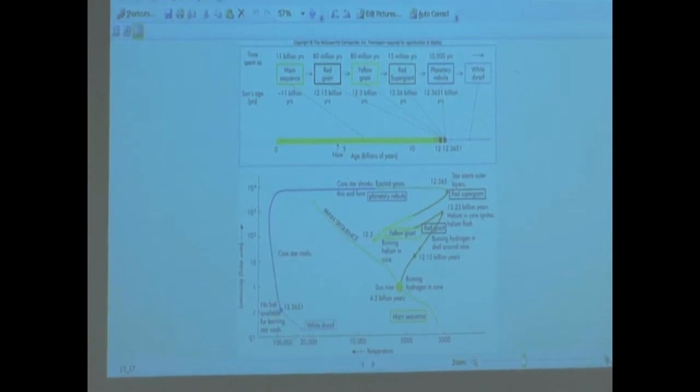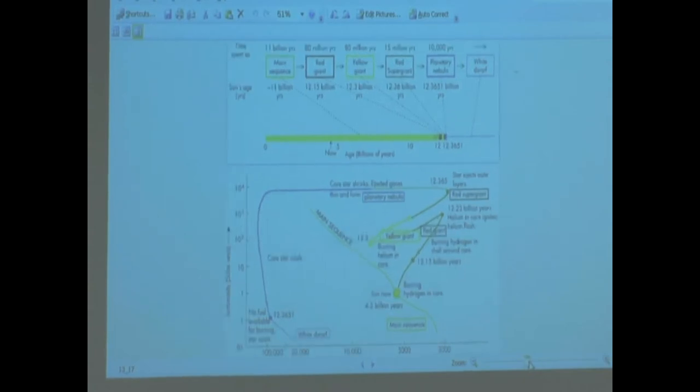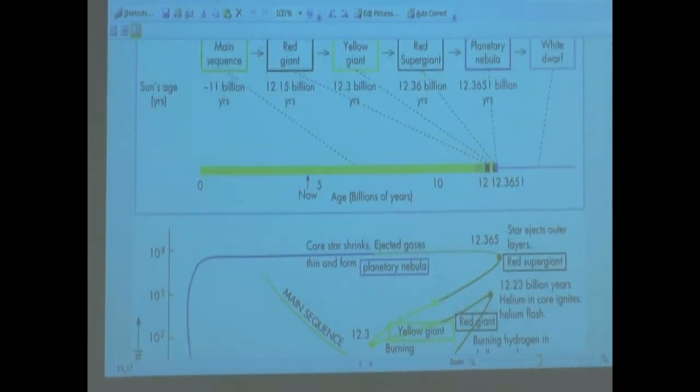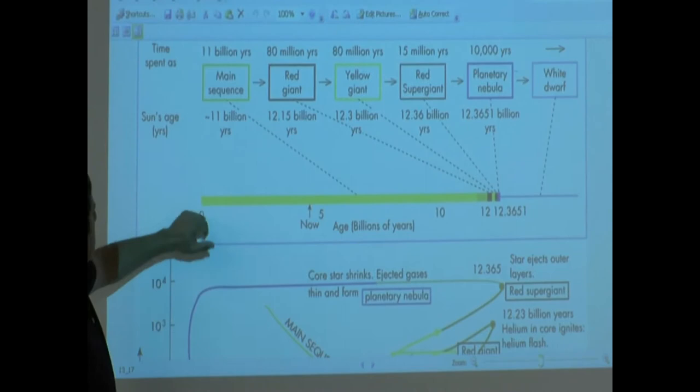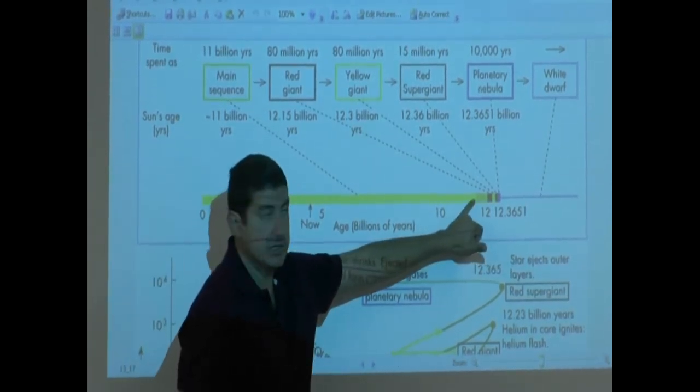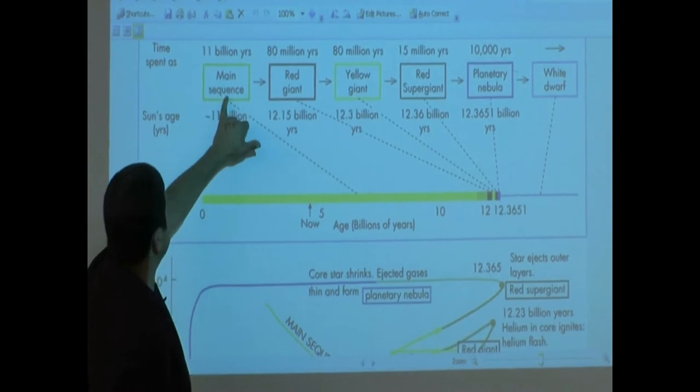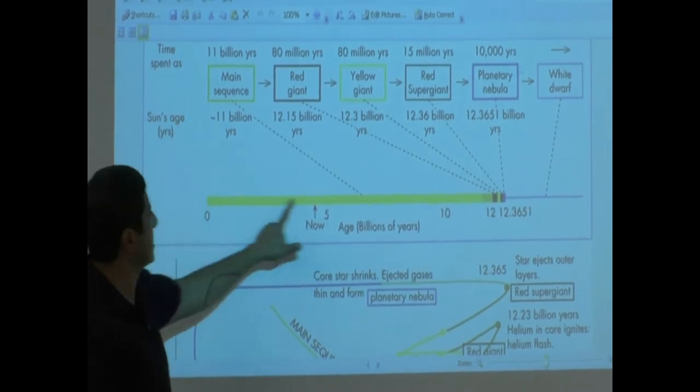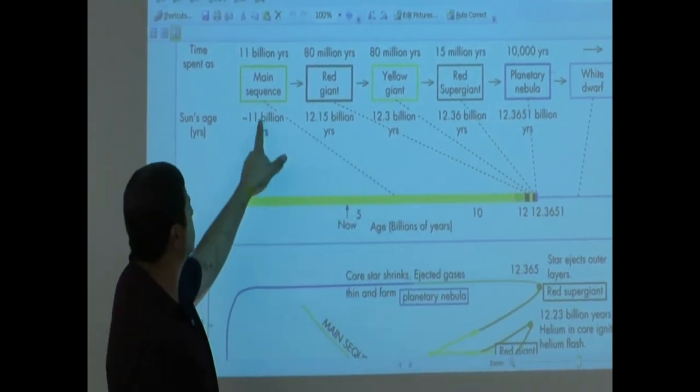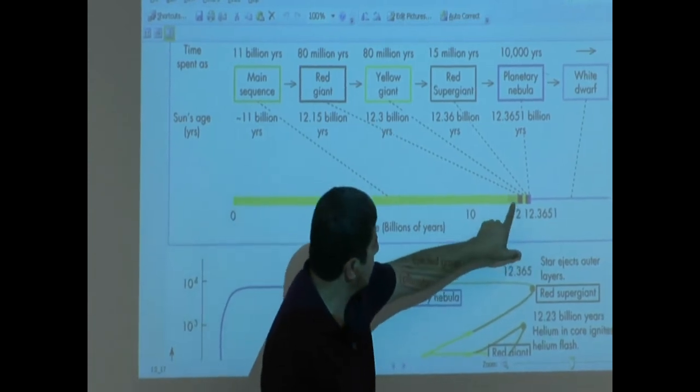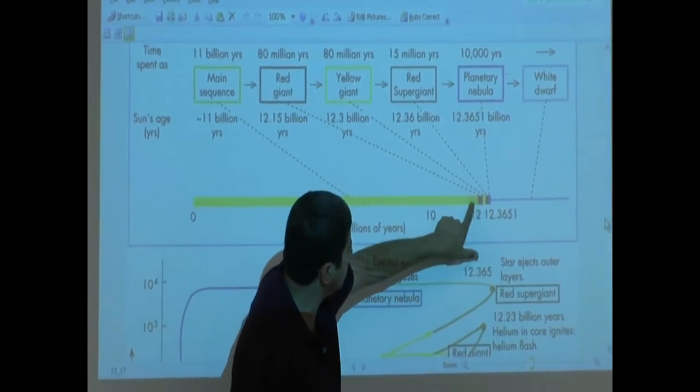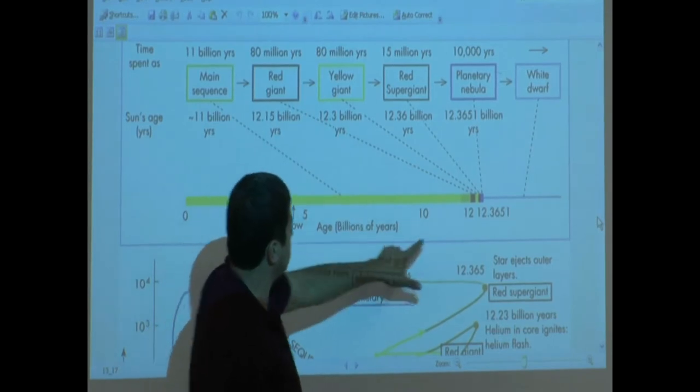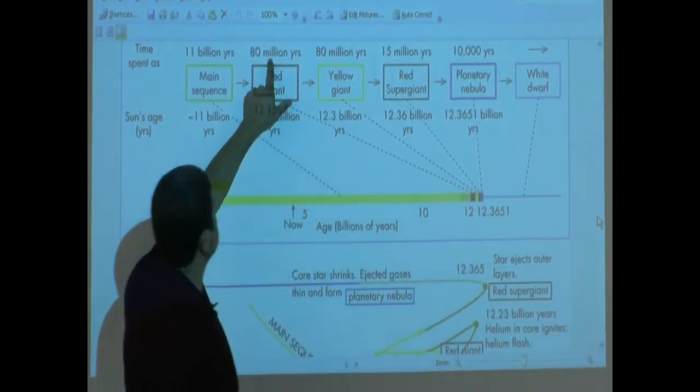I'm going to zoom in here a little bit. On the top, it shows the main sequence life. You see the yellow one is the main sequence lifetime. Our sun's main sequence lifetime is about 11 billion years. Then the orange kind of thing here is when it begins to die. It becomes a red giant that takes about 80 million years. You see this little piece? That thing takes 80 million years.